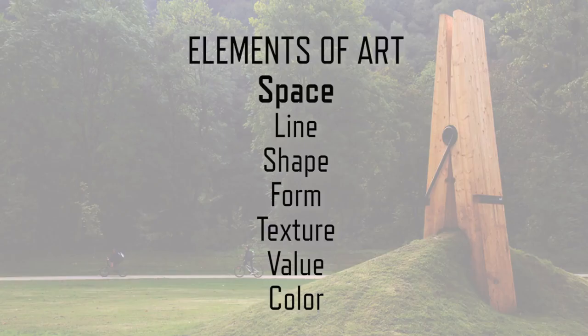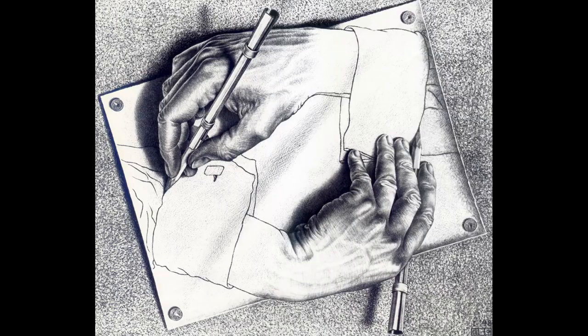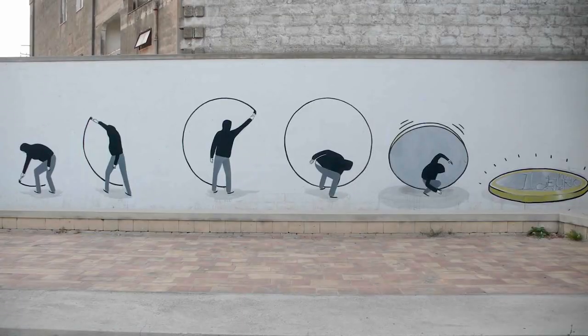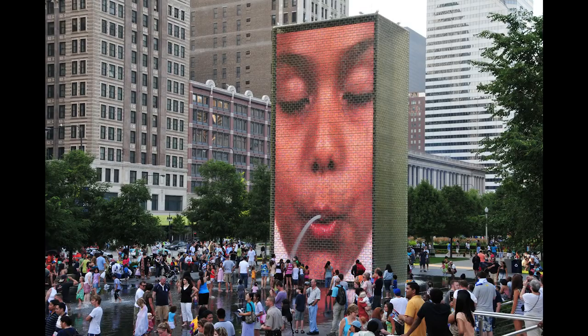Space is one of the seven elements of art, along with line, shape, form, texture, value, and color. Space is the area in which an artwork is organized. It encompasses the area within a work of art, and can also include the area immediately outside of and around a work of art.